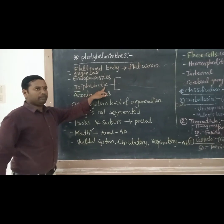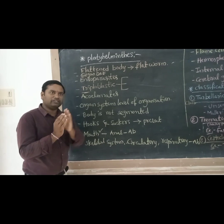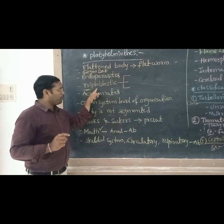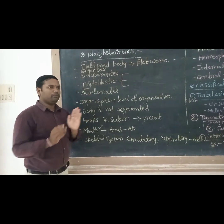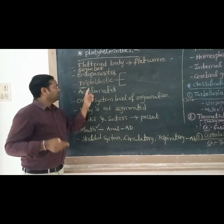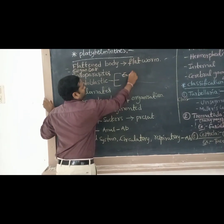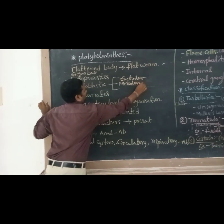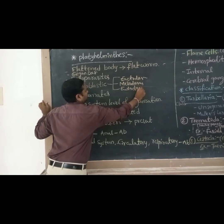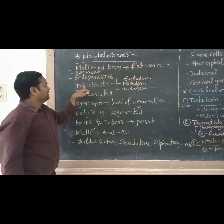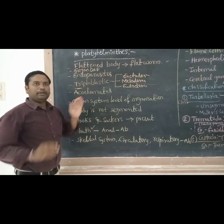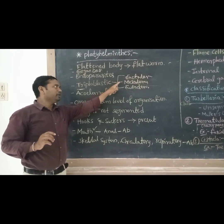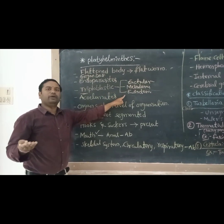They are triploblastic animals. Triploblastic animals mainly have three layers. The first one is ectoderm, the second one is mesoderm, and the inner layer is endoderm. Triploblastic animals totally have three structures: outer layer ectoderm, middle layer mesoderm, and inner layer endoderm.